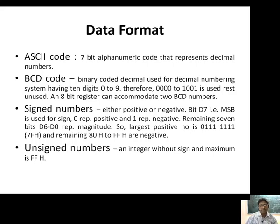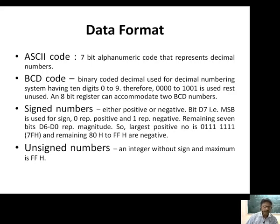We also have unsigned numbers — an unsigned number is an integer without a sign, so all 8 binary digits can be used to represent the magnitude. The minimum value of an unsigned number is 00H and the maximum value is FFH hexadecimal.